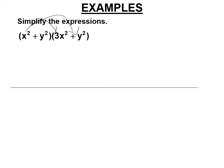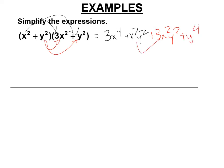Everything times x squared: 3x squared times 3x squared gives 3x to the fourth — add the exponents. x squared times y squared is x squared y squared. Then we multiply everything times y squared: y squared times 3x squared is 3x squared y squared, y squared times y squared is y to the fourth. So the answer is 3x to the fourth plus 4x squared y squared plus y to the fourth.